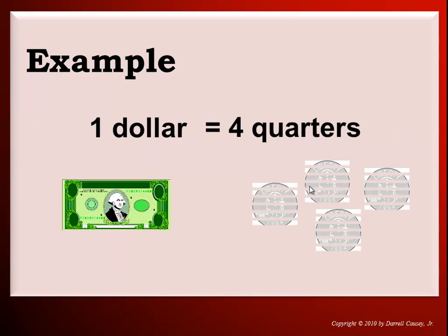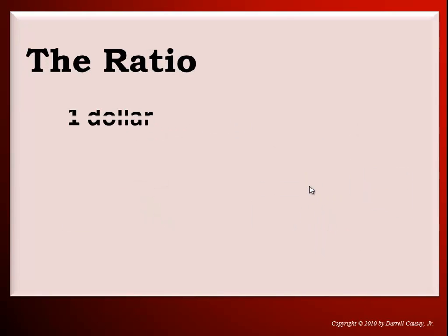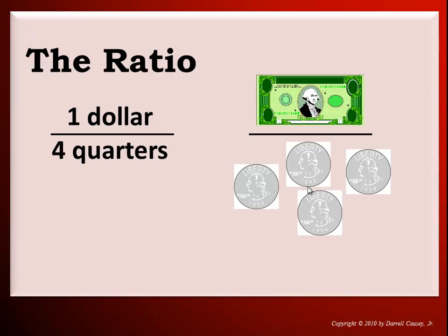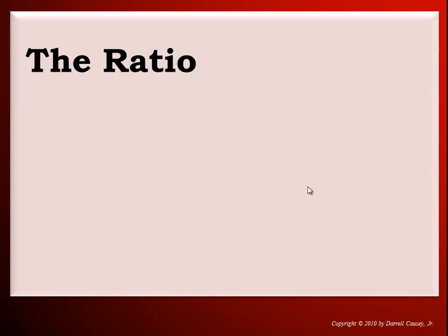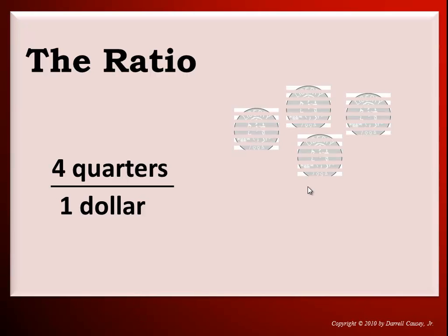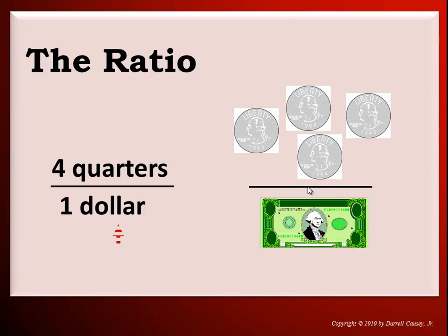Example: one dollar, four quarters. The ratio, one dollar over four quarters, and that's the this per that. We could also say four quarters per one dollar, and that's our this per that.